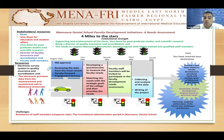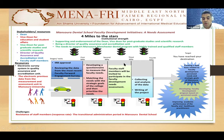The stages I obtained are: reviewing the data from the most recent faculty engagement surveys and developing the questionnaire, then matching the needs with the strategic goals of the college, then prioritizing the needs. After that, faculty staff members will be invited to participate in the faculty development needs assessment, then collecting and analyzing data and writing the project.